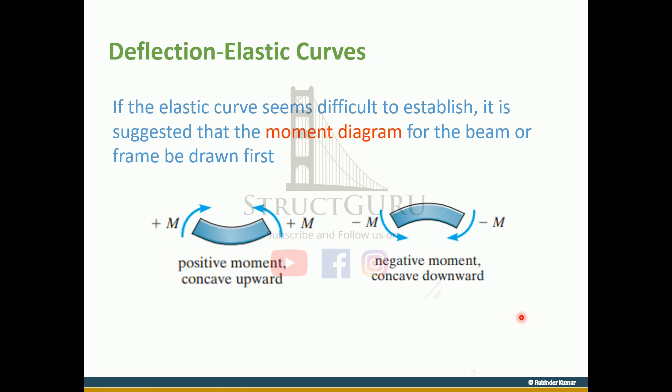For a moment diagram, if the positive moment occurs, we need to make a concave upward shape. If there is a negative moment, we need to draw the concave downward shape of the elastic curve.